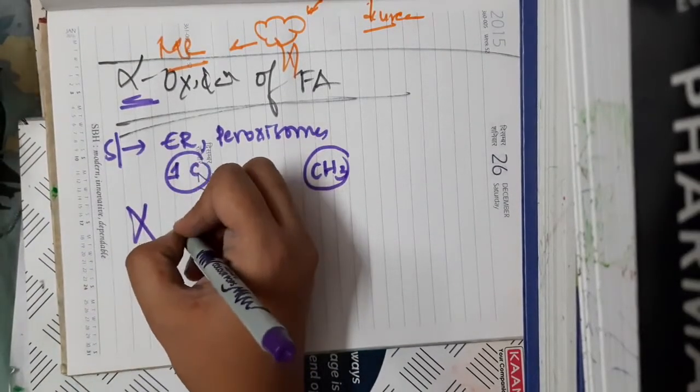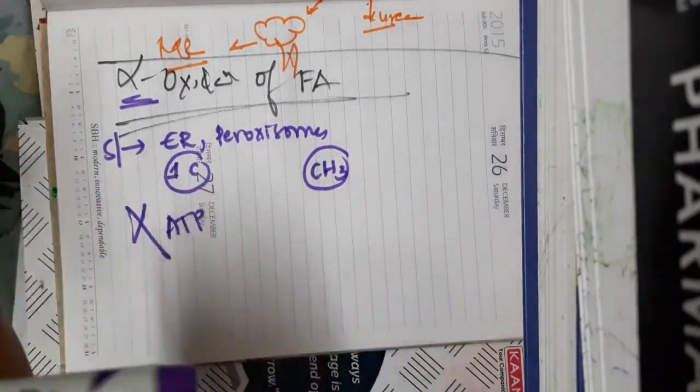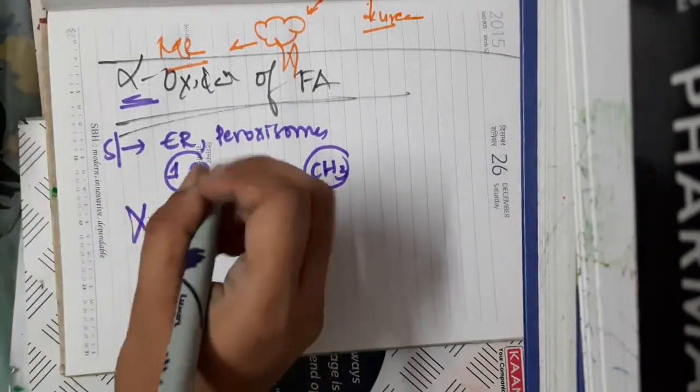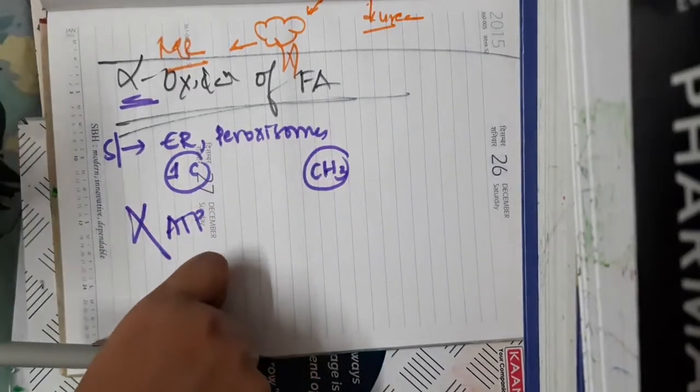In the alpha oxidation of fatty acid, there is no consumption or generation of ATP. ATP are not consumed, they are not generated at all. This alpha oxidation of fatty acid does not require activation.